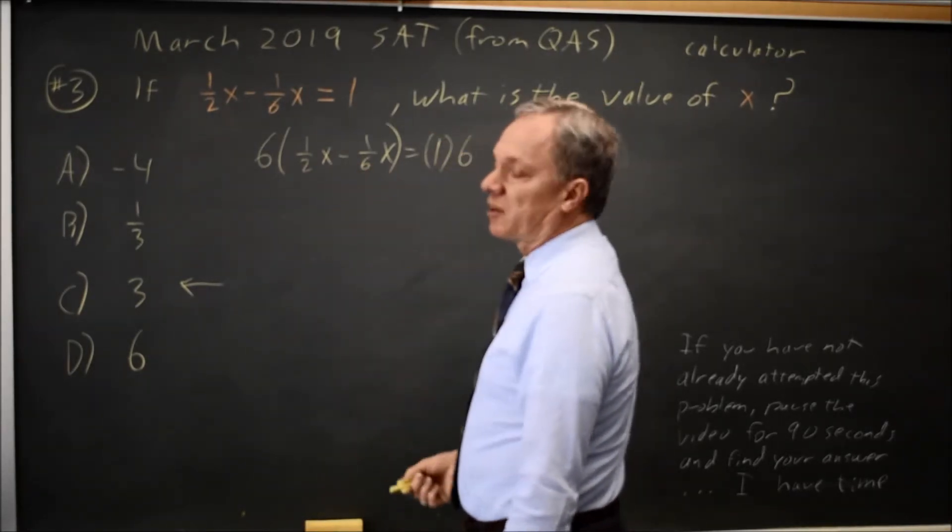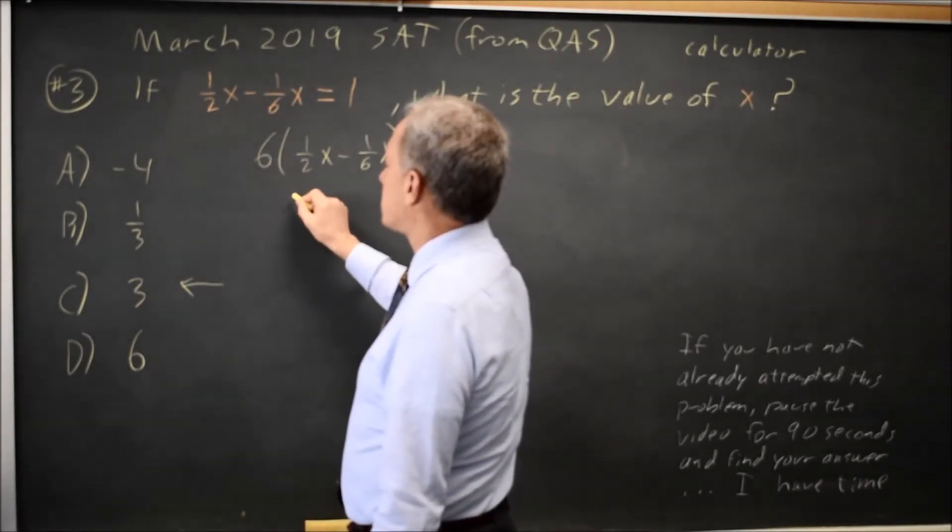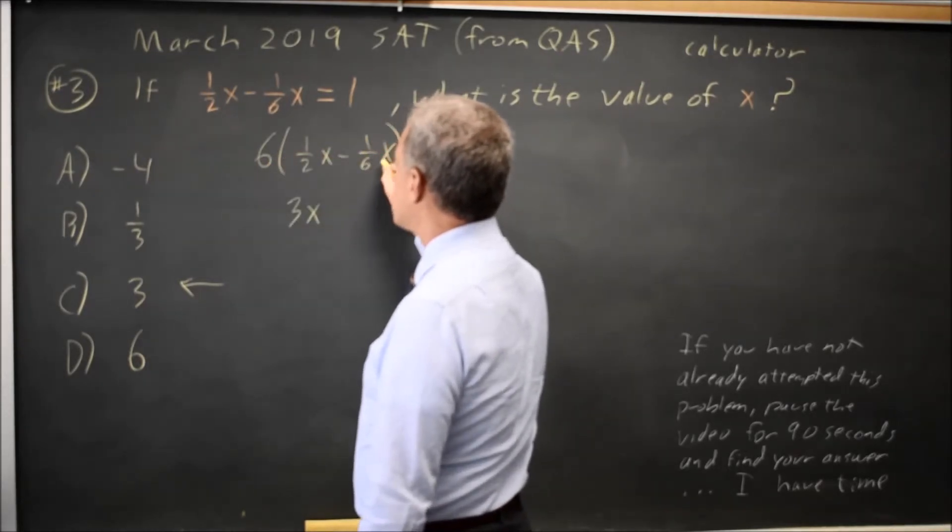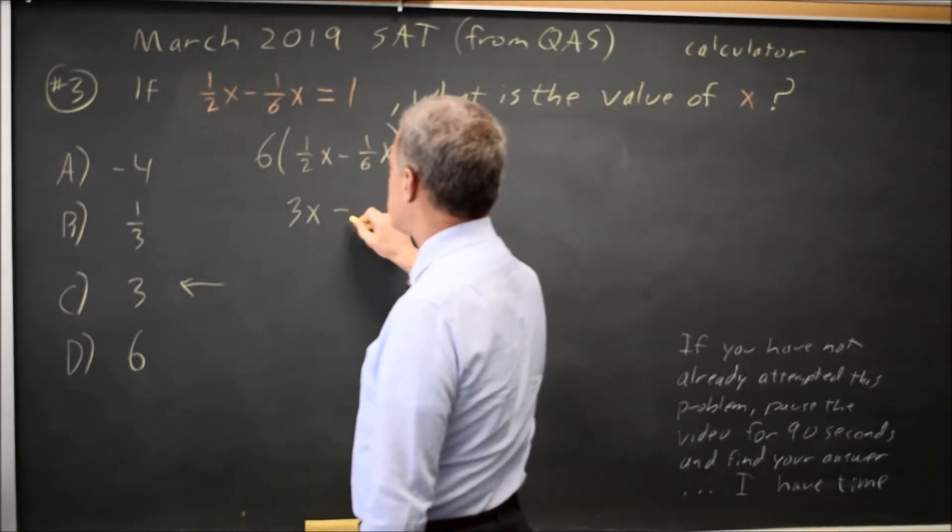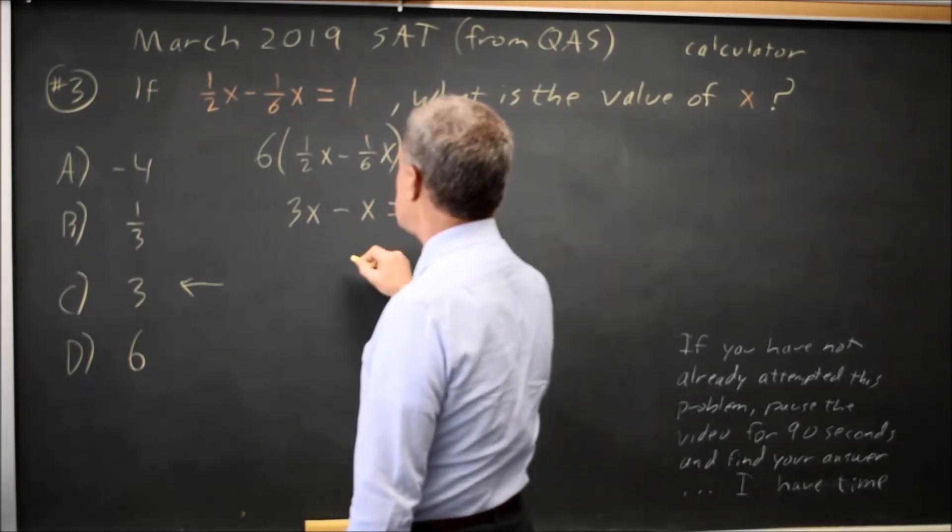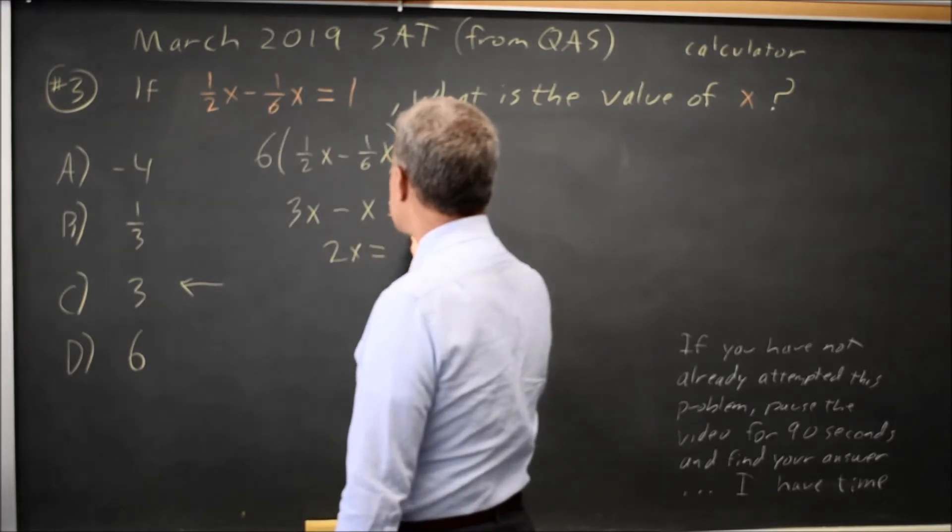So let's multiply by the least common multiple of 2 and 6, which is 6. If I multiply the left by 6, I have to multiply the right by 6. 6 times 1 half is 6 over 2 is 3 times x. 6 times negative 1 sixth x is negative 6 over 6x, which is negative x. So 3x minus x equals 1 times 6 is 6. 3x minus 1x simplifies to 2x. And 2x is equal to 6.